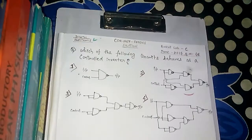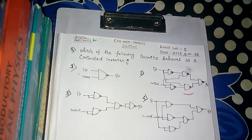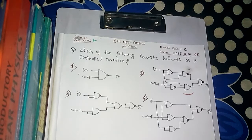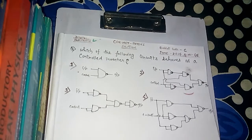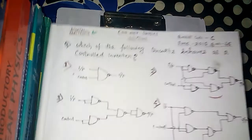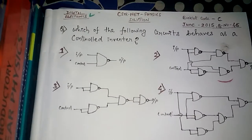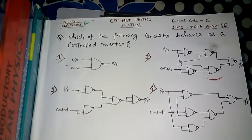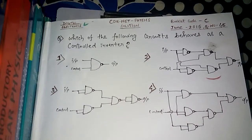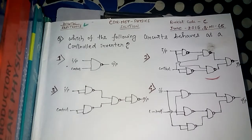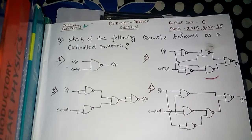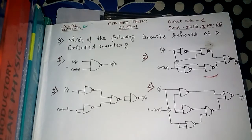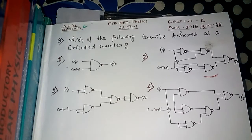Welcome to the channel. Today we have a problem from June 2015, question number 45, booklet code C, from digital electronics. It asks which of the following circuits behaves as a controlled inverter. The basic confusion about this problem is what a controlled inverter is. A controlled inverter is the same as an XOR gate — a XOR gate and a controlled inverter are the same thing.